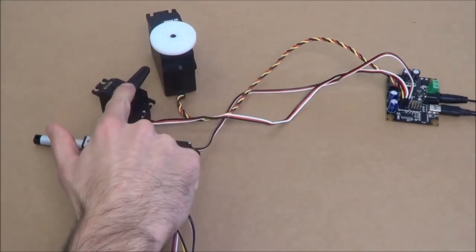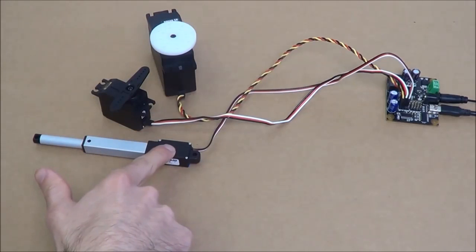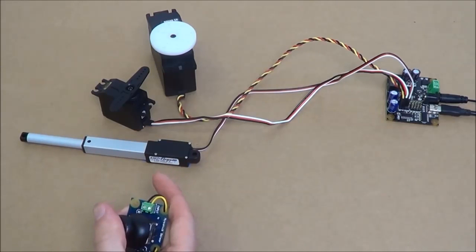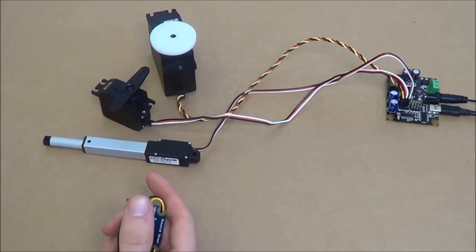Of course, not all servos are going to look like this guy. We've had this one sitting here all along. What this is, is a linear actuator. It takes the rotational motion of the motor, and using a screw thread, converts it into a linear motion.